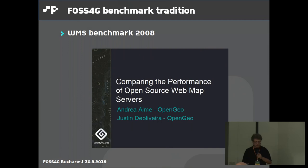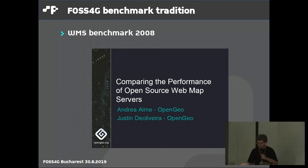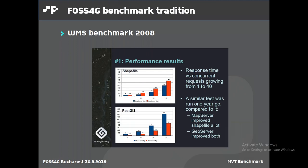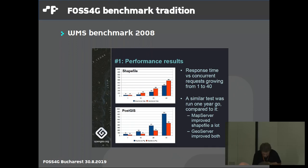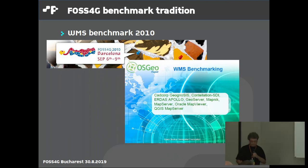There is a long tradition of benchmarking at FOSS4G. In 2008 was the first WMS benchmark, comparing GeoServer and MapServer back then. MapServer was much faster than GeoServer. And in Barcelona in 2010, we had many more contestants in this WMS benchmark, and it went further for a few years.